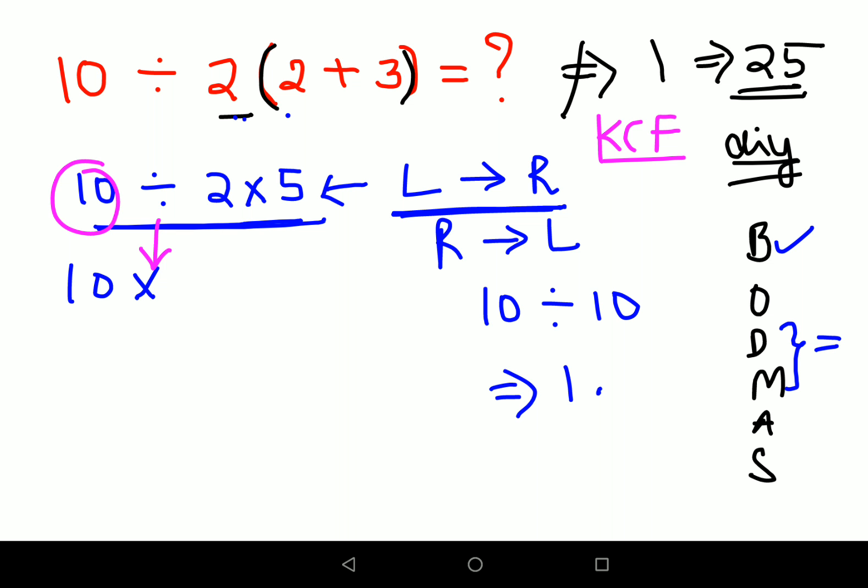And F is basically flipping. That means you are going to take the reciprocal or flip 2. Reciprocal of 2 is 1 by 2 into 5. So now what happens is this is cancelling. And now you are just left with 5 into 5. Your final answer is then coming out to be 25.